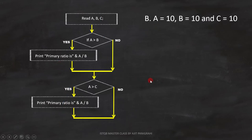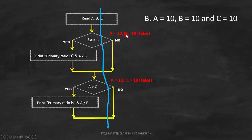Let's analyze option B: A equals 10, B equals 10, and C equals 10. Here, A is not greater than B, and A is not greater than C either. So this path of the code will execute. With this, we miss both the statements. That is why option B is not the answer.